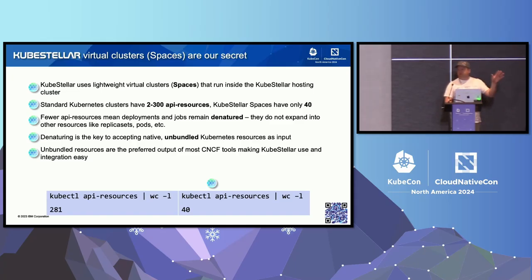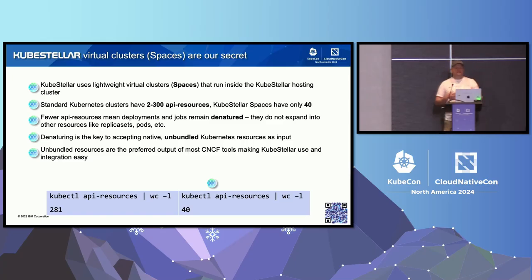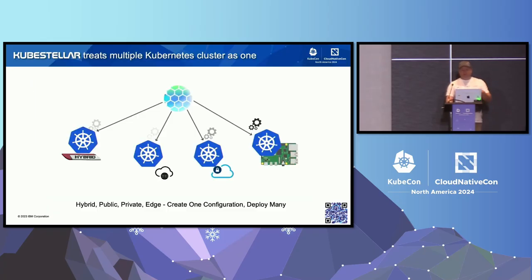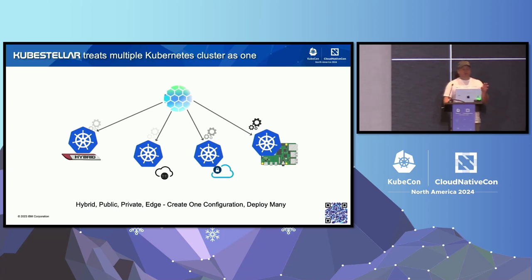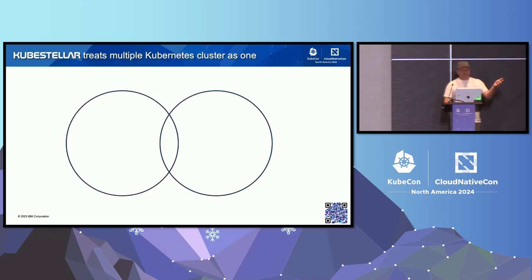How many of you have heard of vcluster? With vcluster you can modify and say 'I don't want these APIs to be available for the cluster I'm about to deploy.' So we deploy a cluster inside of a cluster. It takes a minute to get your head around, but once you understand the concept, you're basically running a cluster as a group of pods inside of another cluster.